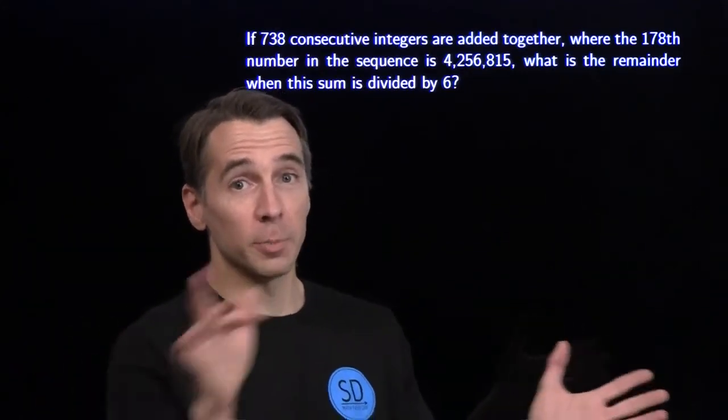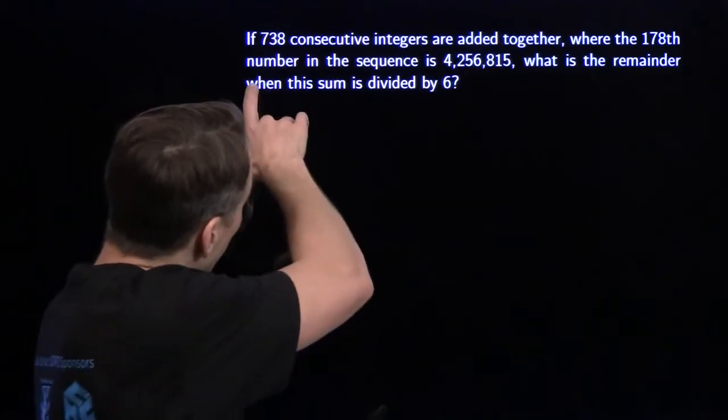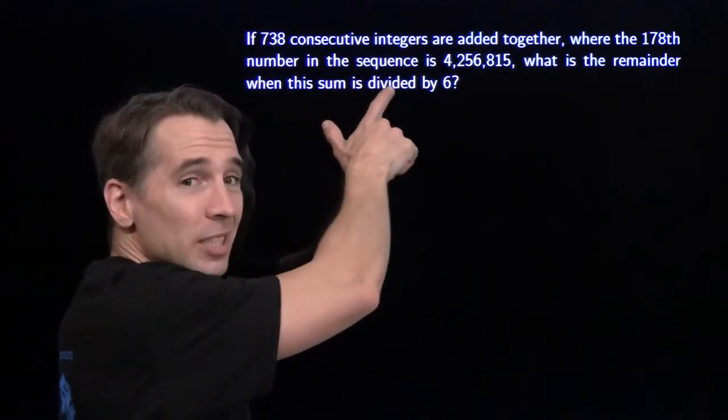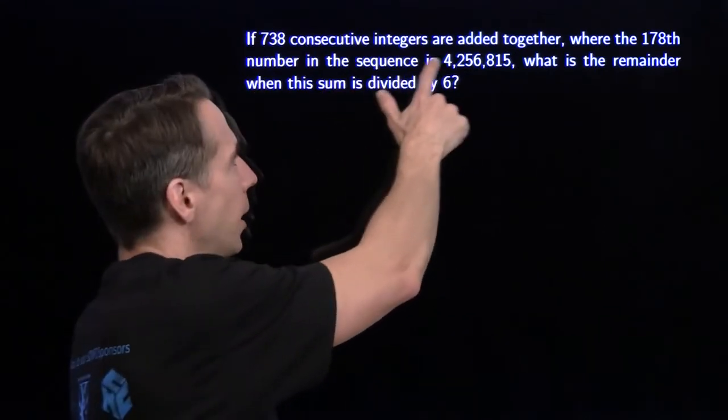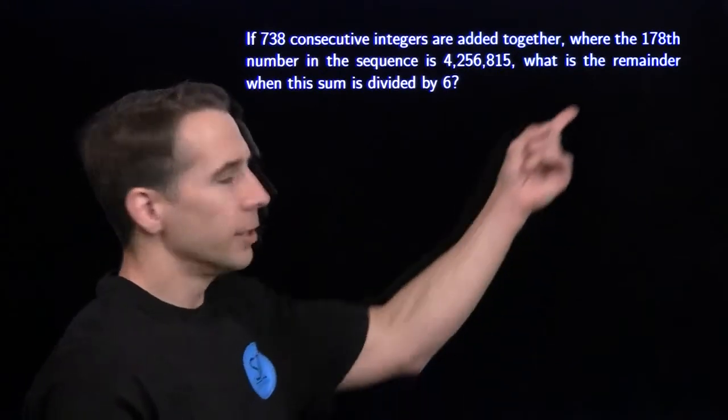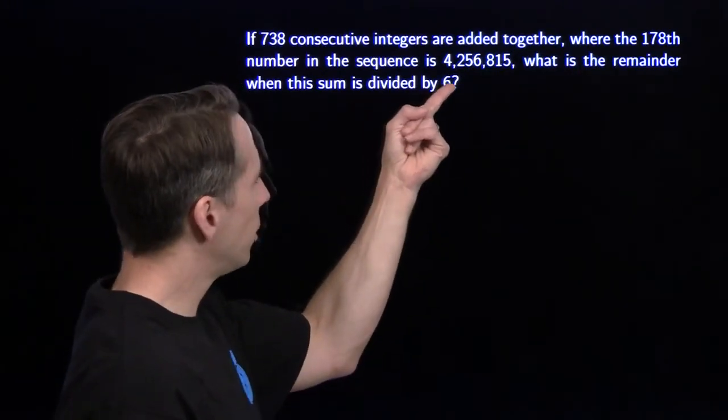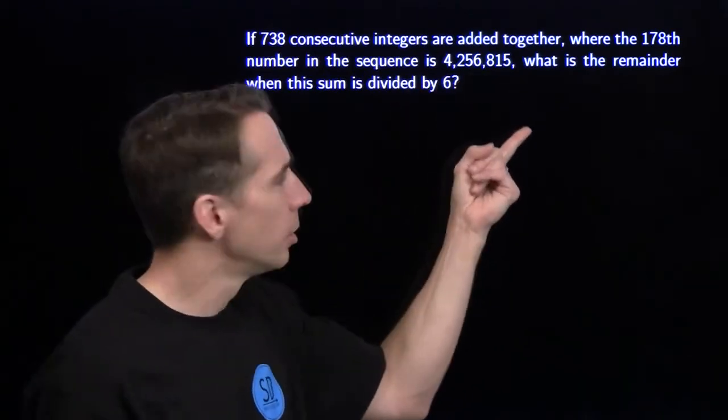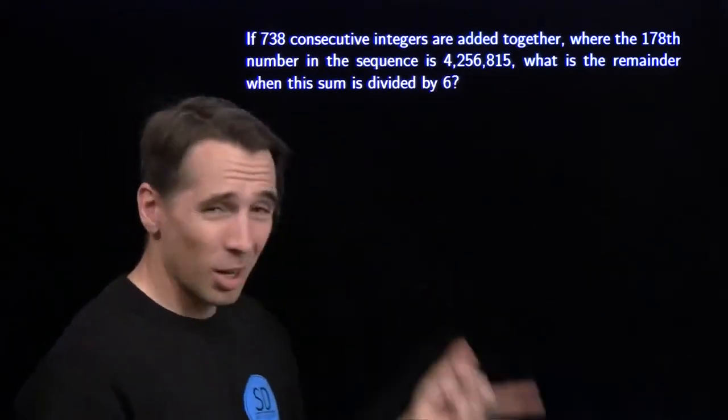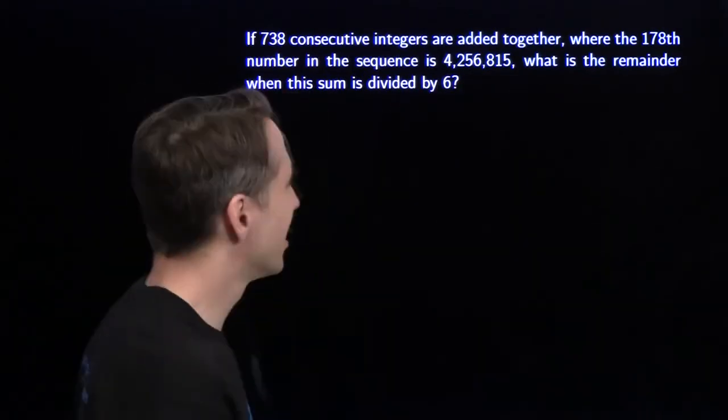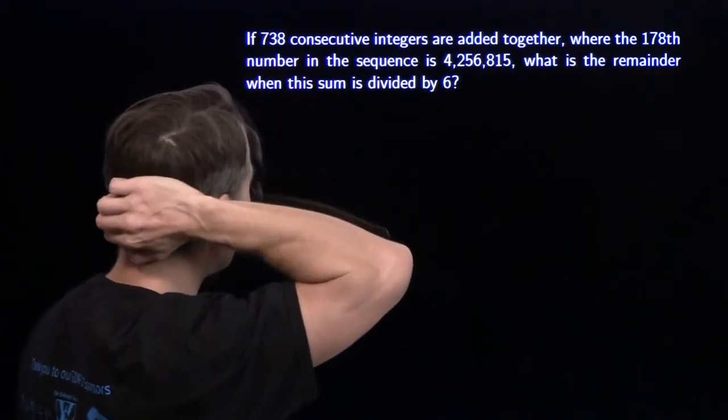I have a couple sequence problems for you this month, and we're going to start right here. We've got 738 consecutive integers that we're going to add all together. The 178th number in this sequence is 4 million, some big number, and we want the remainder when this sum is divided by 6.